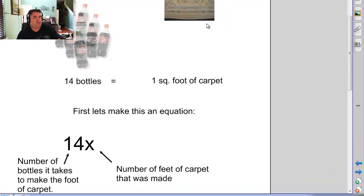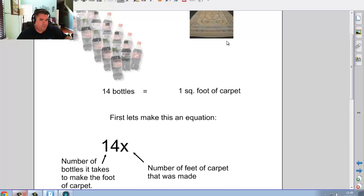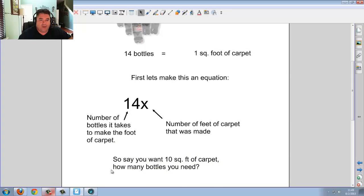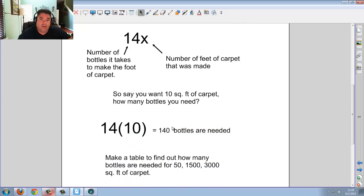So they're saying 14X meaning for every 14 bottles, you get a square foot of carpet. So the X value is how many square carpet was made. So in other words, you tell me there was five square foot of carpet. Well, then you times that by 14 to figure out how many bottles you used. Well, if there were 20 feet of carpet made, you would take 20 times 14. So say you wanted 10 square foot of carpet. How many bottles you need? Well, just take 10 times 14. And you get 140.